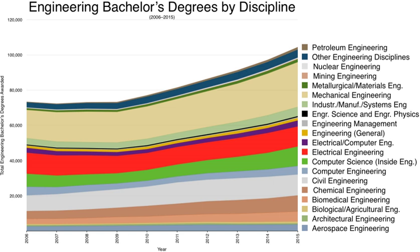Some professors and educators believe that engineering programs should change to focus more on professional engineering practice, and that engineering courses should be taught more by professional engineering practitioners rather than engineering researchers. By the end of the first year, an engineering student should begin to decide on a specialization. Specializations could include civil (including structural), mechanical, electrical (often including computers), chemical, biological, industrial, aerospace, materials (including metallurgical), agricultural, and many other specializations.